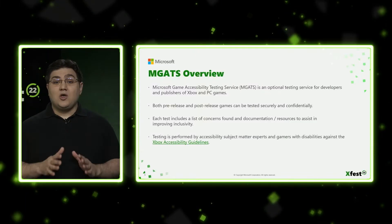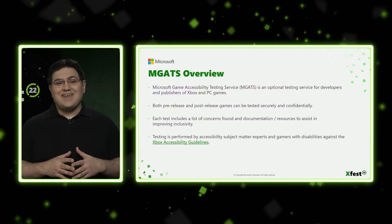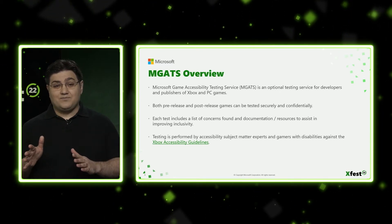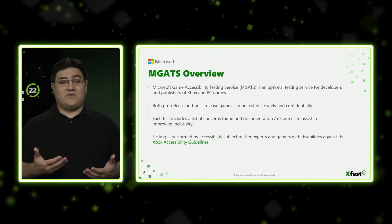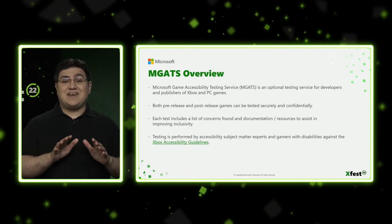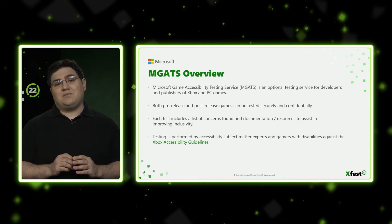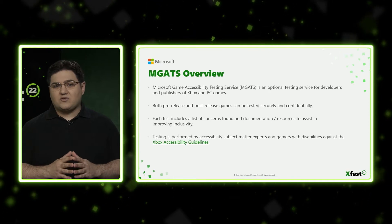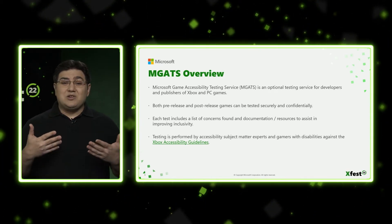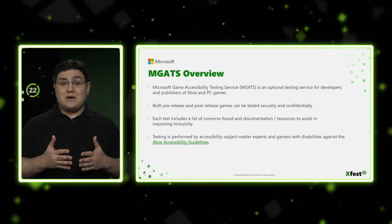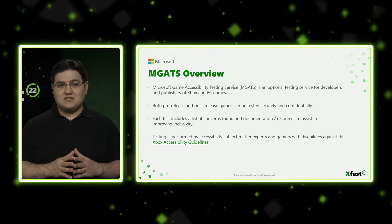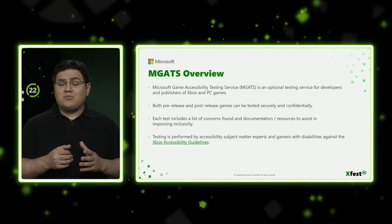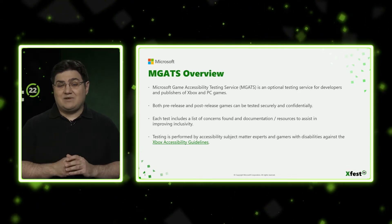So how does it work? In MGATS, we can test games that are in both a pre-release or post-release state. We strongly encourage developers to submit their products for testing as early in the development lifecycle as feasible, usually when they have their first relatively stable vertical slice ready. However, we realize that many games run as services and may be updated for years after release. Those titles may want to make accessibility improvements for their community, and we can accommodate that — even if a game isn't going to be updated, developers can take learnings and bring them into the next title in the series.